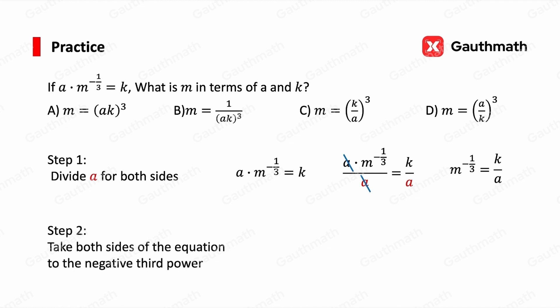The second step, we take both sides of the equation to the negative third power. So (m^(-1/3))^(-3) = m itself. So m = (a/k)^(-3). Then we may use the reciprocal to make the exponent positive. So m = (k/a)³. The correct answer is C.